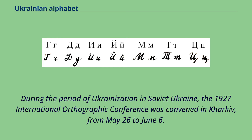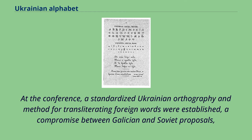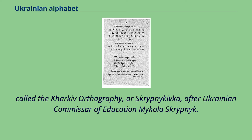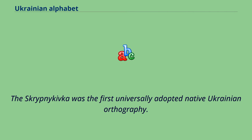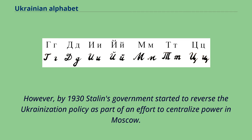In 1925, the Ukrainian SSR created a commission for the regulation of orthography during the period of Ukrainization. The 1927 International Orthographic Conference was convened in Kharkiv from May 26 to June 6. A standardized Ukrainian orthography and method for transliterating foreign words were established — a compromise called the Kharkiv orthography, or Skrypnykivka, after Ukrainian Commissar of Education Mykola Skrypnyk. It was officially recognized in 1928 and adopted by the Ukrainian diaspora. The Skrypnykivka was the first universally adopted native Ukrainian orthography.